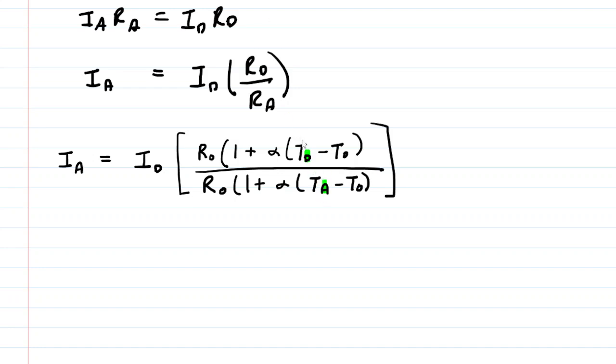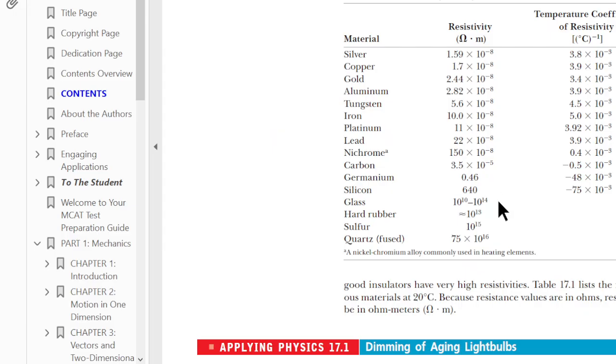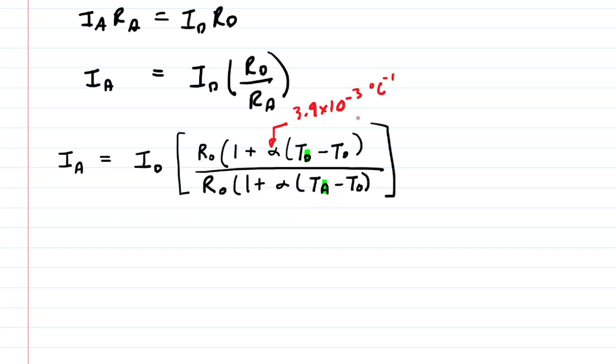Notice we attach a little subscript to the temperature of D for Death Valley and a subscript A for Antarctica. And now we want to talk about the structure of this equation, and that includes this alpha. This is a temperature coefficient of resistivity. We would need to look that up for copper. Here is a table from the textbook that would allow us to do that. We look up copper. We can see that its temperature coefficient of resistivity is 3.9 times 10 to the minus 3, and that unit is inverse degrees Celsius.